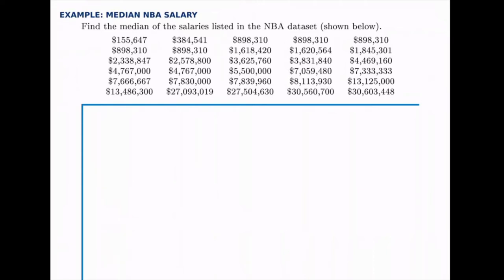Find the median of the salaries listed below. These are the salaries from the MBA data set. We have 30 values and we want to find the median. The median is the middle data point. Helpfully, these salaries have been listed in order from smallest to largest — the smallest value appears first, they increase along each row and down to the next row, until we reach the largest value at the bottom right.